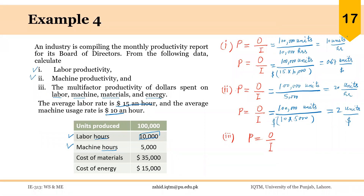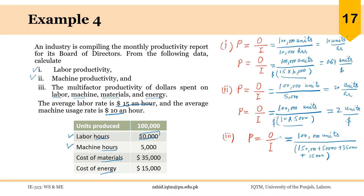Finally, we have to calculate multi-factor productivity. The output is the same — 100,000 units. The input in terms of dollars is $150,000 for labor, $50,000 for machines, $35,000 for materials, and $15,000 for energy. So all of this is in dollars, and that totals $250,000.